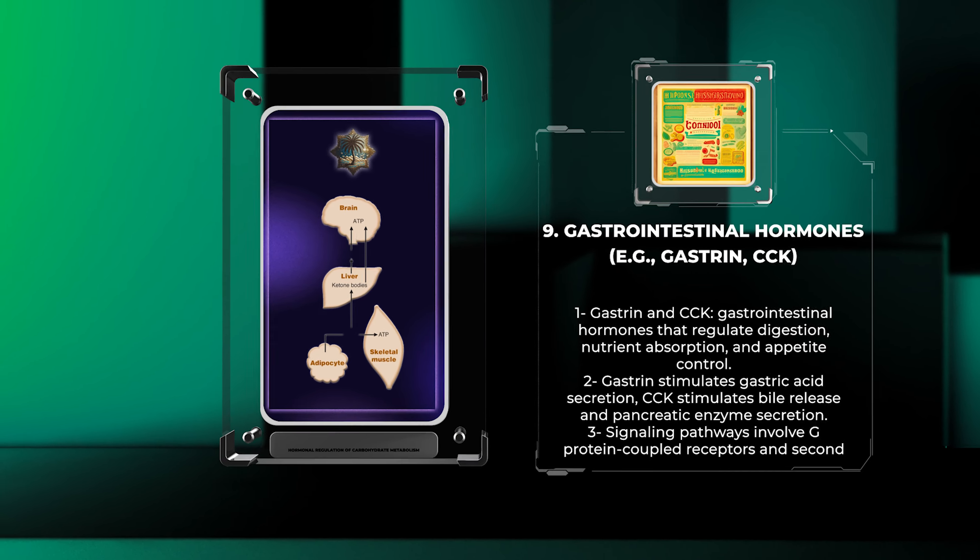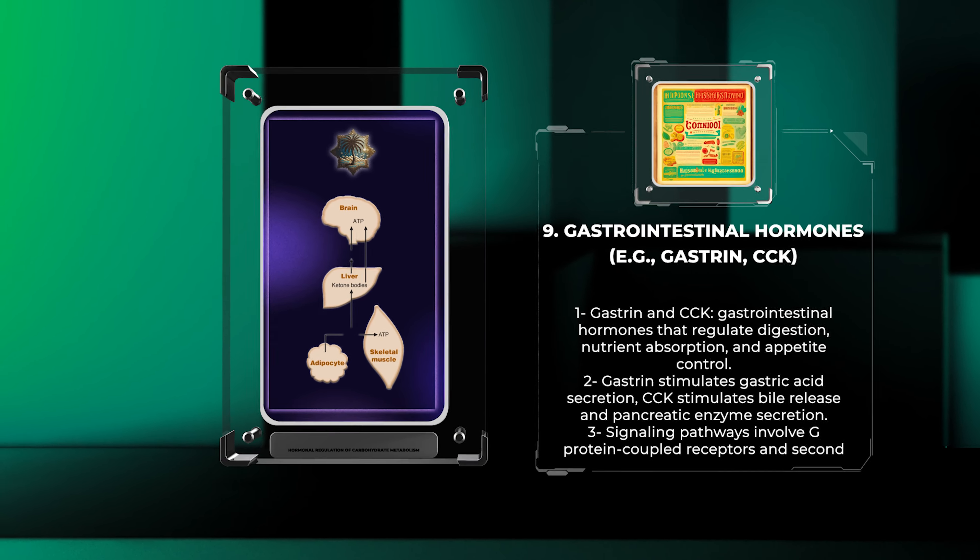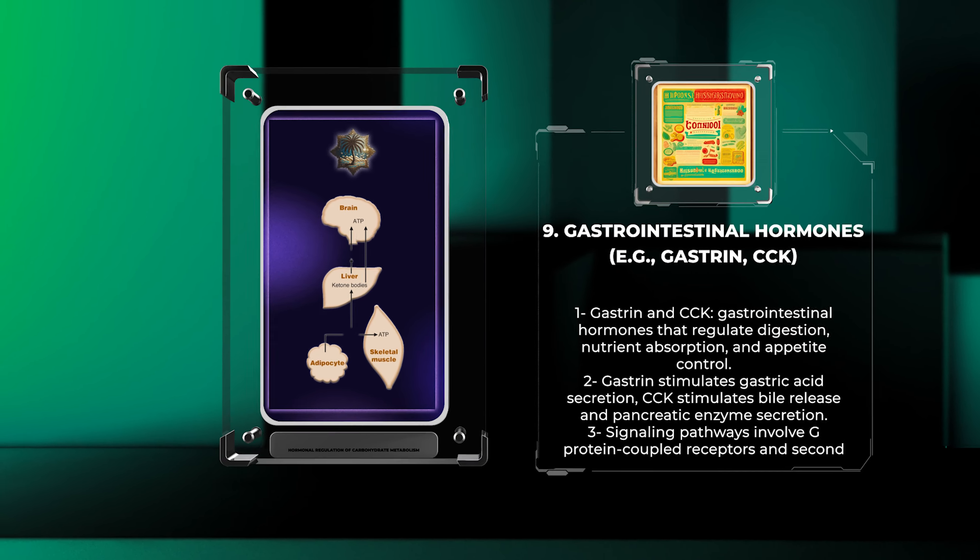These hormones regulate digestion, nutrient absorption, and appetite control. Gastrin, produced by stomach G cells, stimulates gastric acid secretion, while CCK, secreted by the small intestine.